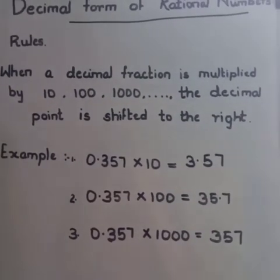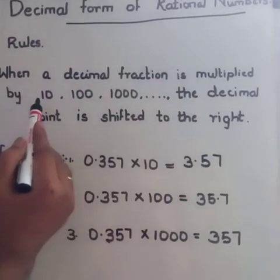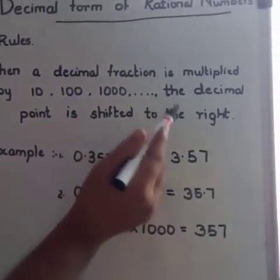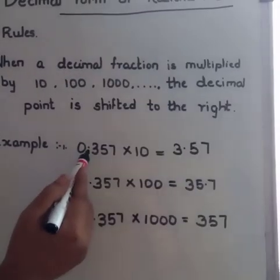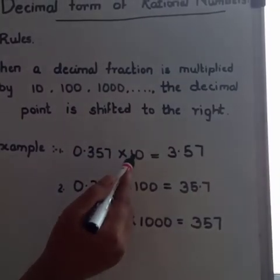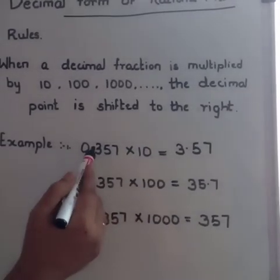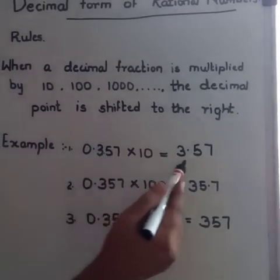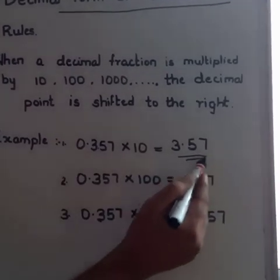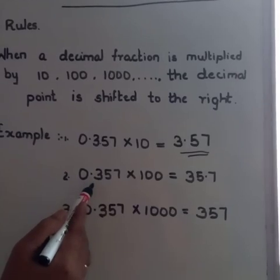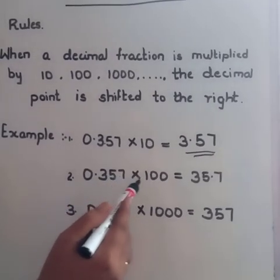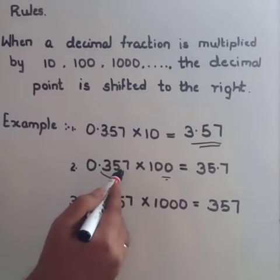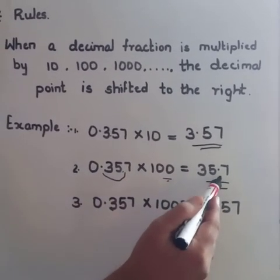There are a few rules to be followed. Rule one: when a decimal fraction is multiplied by 10, 100, or 1000, the decimal point is shifted to the right. For example, 0.357 × 10 gives 3.57 — the point shifts one place right. For 0.357 × 100, there are two zeros, so the point shifts two places, giving 35.7.